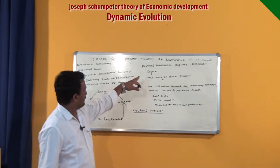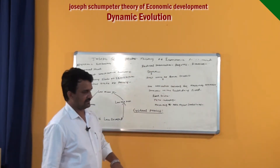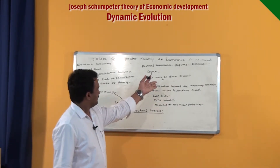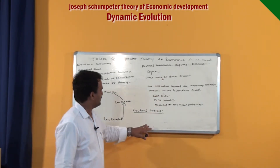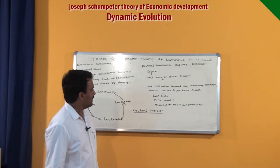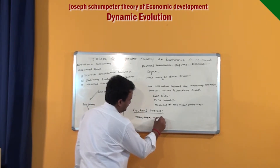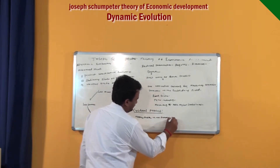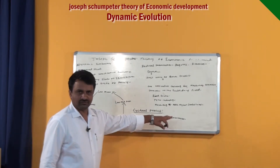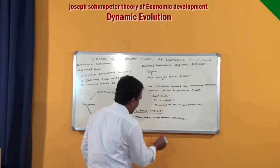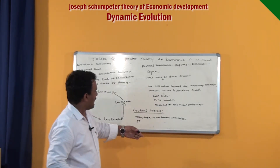As I clarified in the last video, radical innovation requires financial assistance, which is arranged by the banks — that is called the first wave of bank credit. When banks provide financial assistance to the innovator, automatically money supply in the economy increases, and employment opportunities open up.